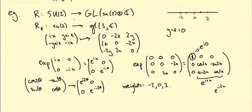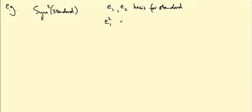So again if I draw my diagram I'm going to get three points, minus two, zero, two, missing out the points minus one and one. So this is the weight space decomposition of this representation.